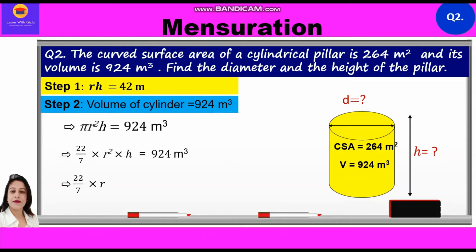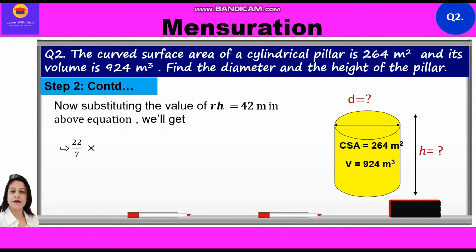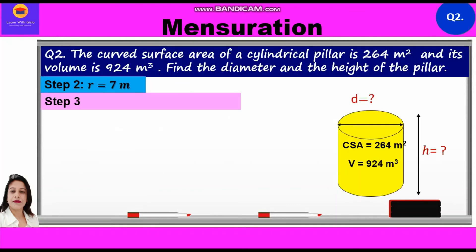Since r² = r × r, we rewrite as (22/7) × r × rh = 924. Substituting rh = 42 meters: (22/7) × r × 42 = 924. Solving: r = 924 × 7 / (42 × 22) = 7. So radius = 7 meters.